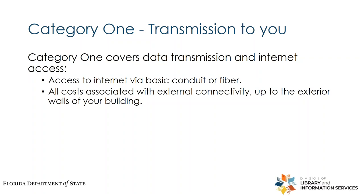Category 1 is everything that carries the internet to and from your building — upload and download speeds. It's the fiber, the series of tubes, so to speak — the cost of transmitting information from your service provider to your facility. Category 1 can also apply to the construction costs of running fiber to upgrade a connection or if you're constructing a new building. If you are returning to E-Rate after some time off, you may remember that Category 1 previously included voice connectivity.